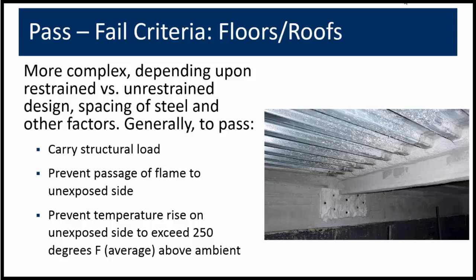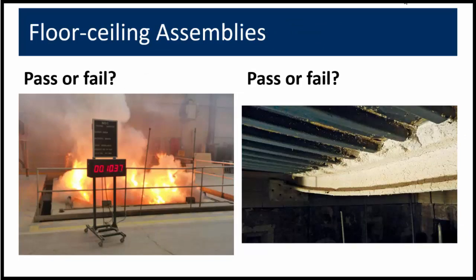Pass-fail criteria for floor and roof assemblies: it affects whether or not the assembly is designed to be a restrained or unrestrained design, as well as the spacing of steel. Some familiar criteria include the ability to carry the load for the prescribed time, preventing the passage of flame and hot gases to the opposite side of the assembly, and limiting temperature transmission to not more than 250 degrees average above ambient. The photo on the left shows flame passage through the assembly — that is a fail. The photo on the right shows the same beam with some deflection after fire exposure, but it did not collapse and is considered acceptable.